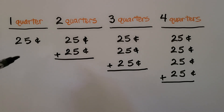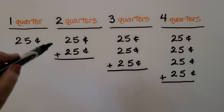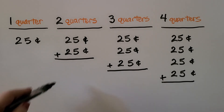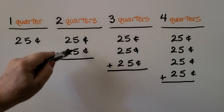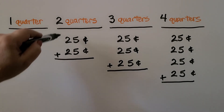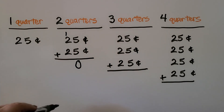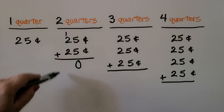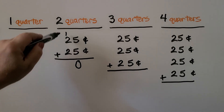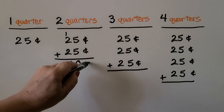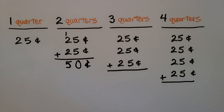One quarter is 25 cents. If we have two quarters, we add 25 plus 25. We have five cents and five cents — that's 10 cents. We regroup it, put a zero in the one cent place. We have two, four, and one more is five. That's 50 cents. Two quarters is equal to 50 cents.